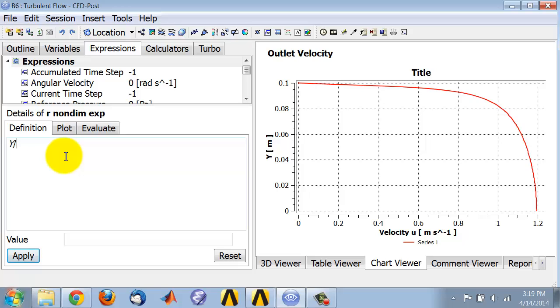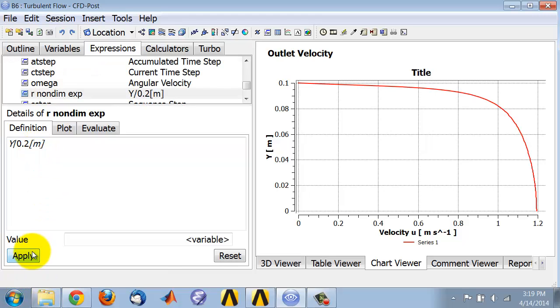Then I need to divide it by the diameter of the pipe, which is 0.2. CFD post likes to keep us honest with units, so I'll say I am dividing it by an entity that is in the unit as meters and I'll apply. That should give me a non-dimensional version of this.